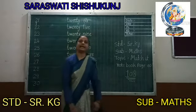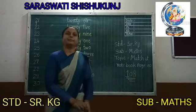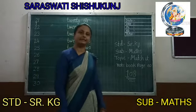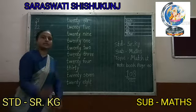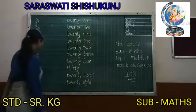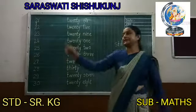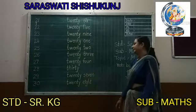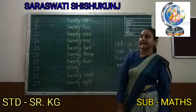Now today we are going to learn matching — matching the number with their number names. Numbers 21 to 30. Students, you already learned number names 21 to 30 in our previous topic. Before I start this topic, I would like to revise number names 21 to 30. Let's start.